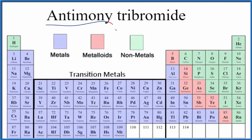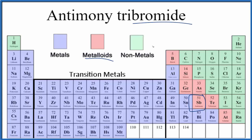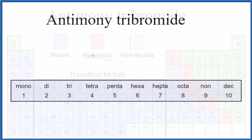Let's write the formula for antimony tribromide. The first thing we want to look at is find antimony on the periodic table — it is right here and it is considered a metalloid. Bromine is right here and that's a nonmetal. We have a metalloid and a nonmetal together, so we're going to treat this as a molecular compound, and we need to take into account the prefix.